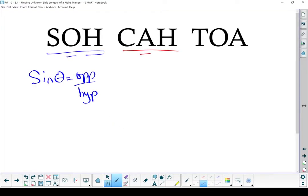Cosine of theta is adjacent over hypotenuse, and tan of theta is opposite over adjacent.